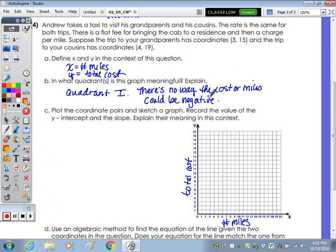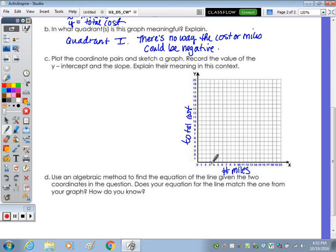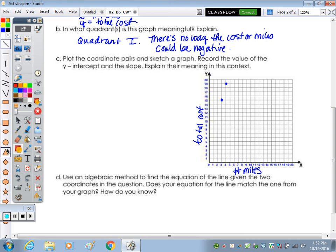Part C: Plot the coordinate pairs and sketch the graph. Our pairs are 3,15 and 4,19. I'm going to sketch the line that goes through those two points. Let's do that in green. In connecting those two, make sure the line goes through each. I end up here.